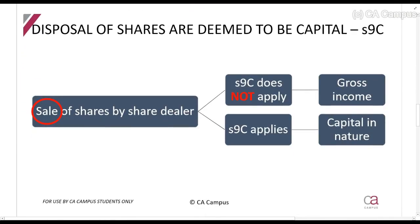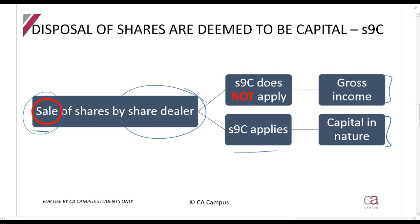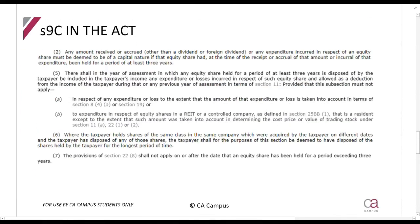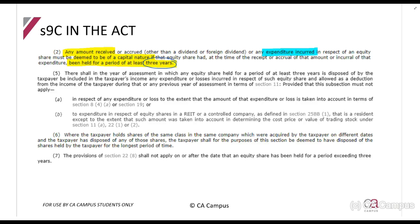Section 9C says: if you're a share dealer and you sell shares, normally things are gross income and you can get a deduction. But if Section 9C applies, you treat your shares as if they are capital in nature. Section 9C only applies when the shares are sold. If it applies, the shares are capital in nature; if it does not apply, it's gross income. For investment shares it's already capital, so Section 9C cannot apply. The section states that any amount received or expenditure incurred in respect of an equity share must be deemed capital in nature if that share was held for at least three years.